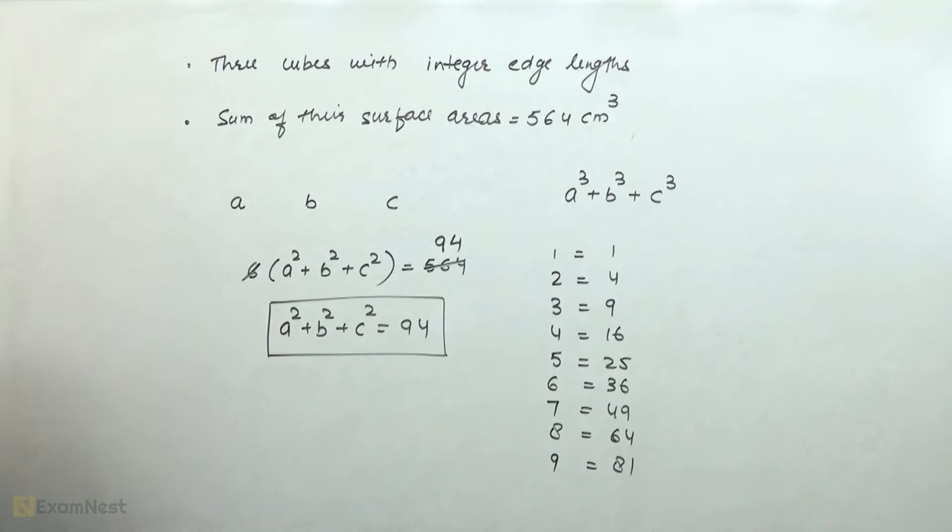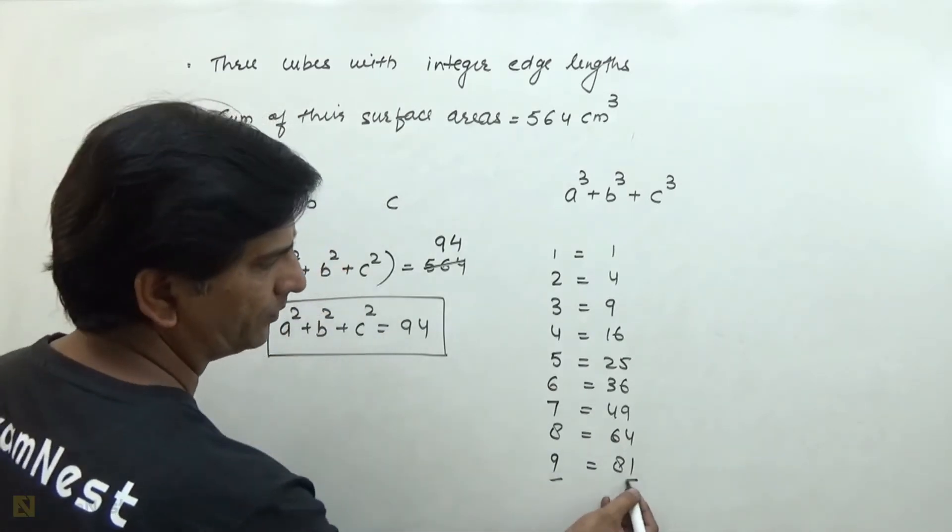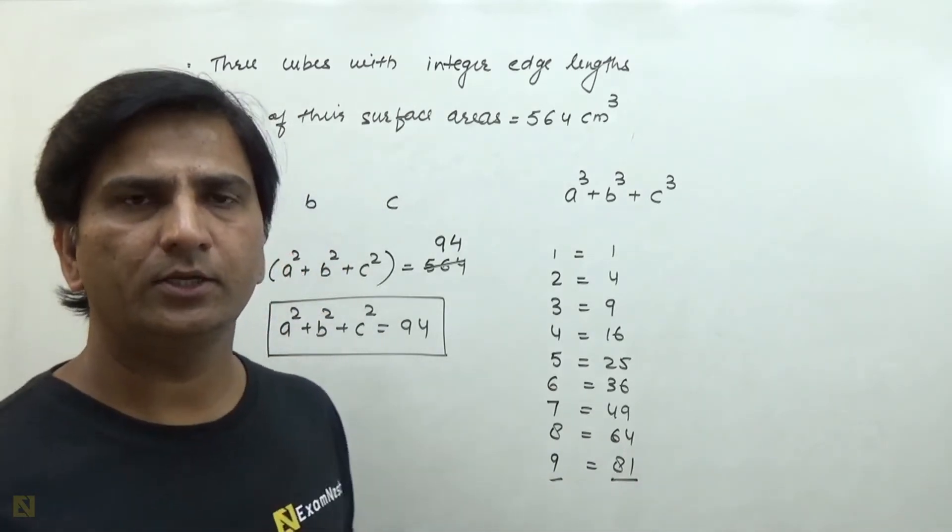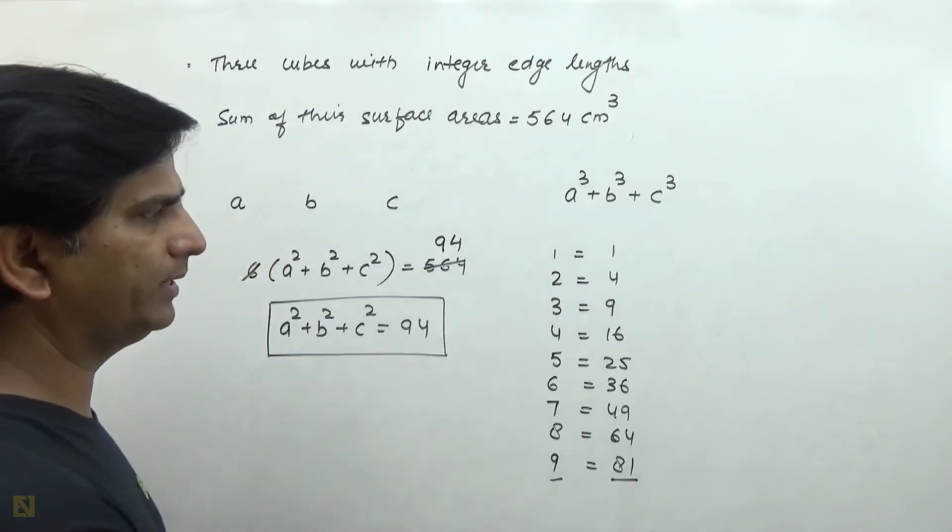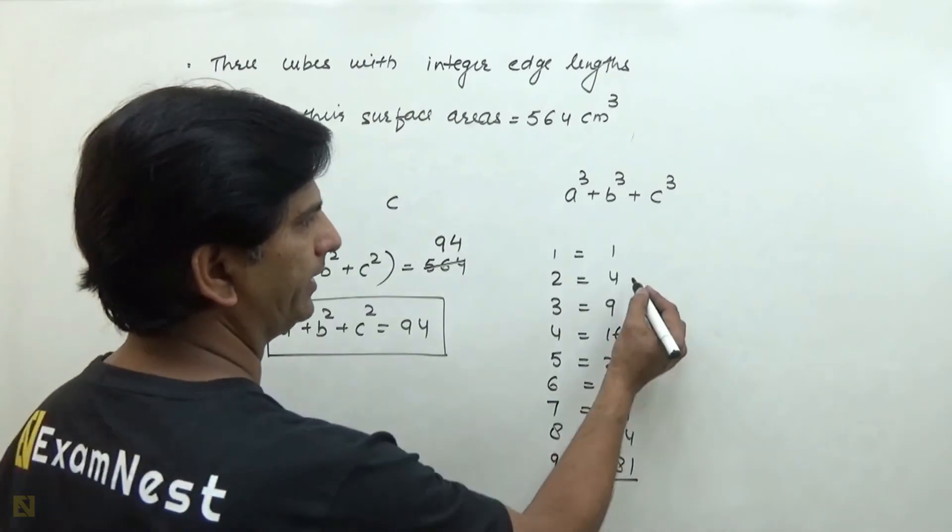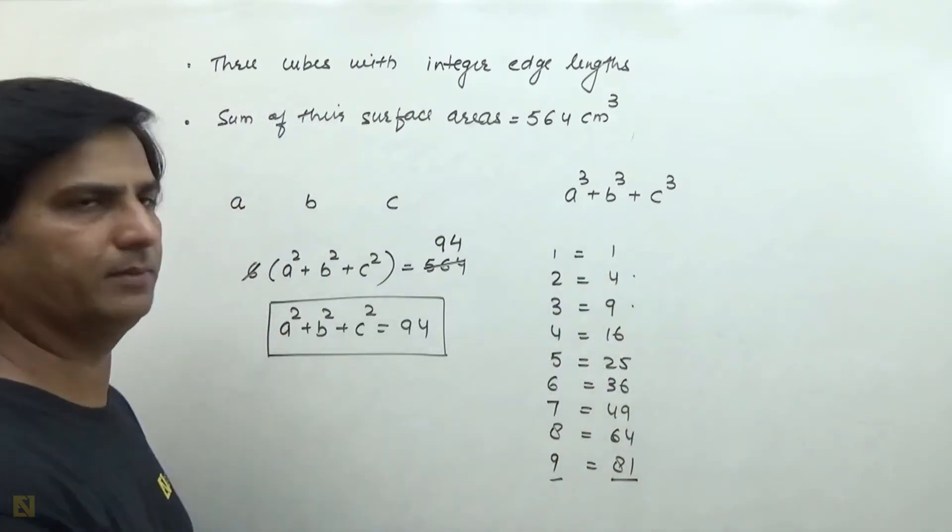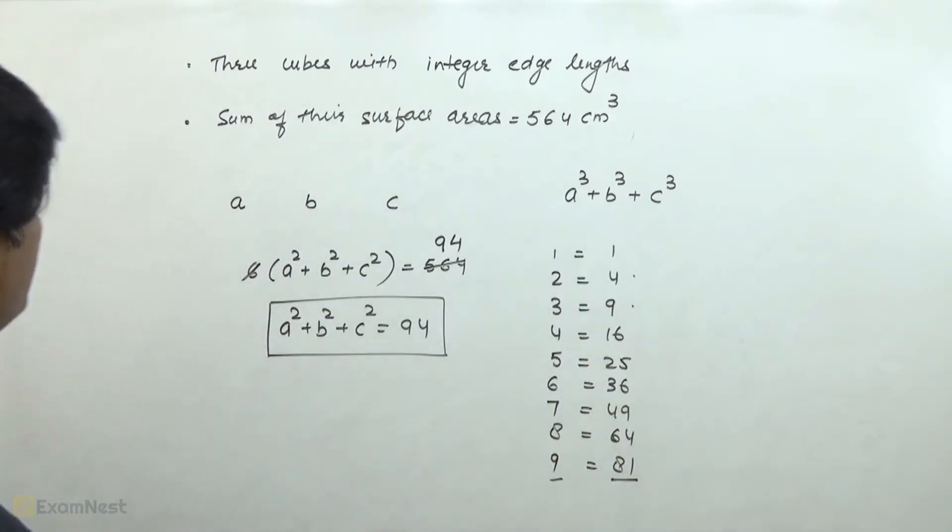If we take the value of one side to 9, then the square is 81. So the sum of the other two sides squared will be 13. Then we will get 94. And with 13, there is a possibility of 4 and 9. That means if our 3 cubes have sides 2, 3, and 9, then our condition is fulfilled.